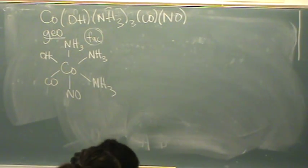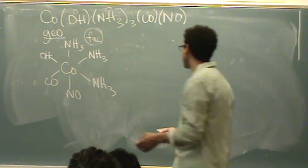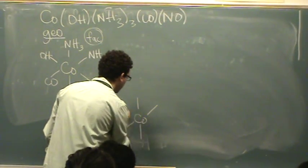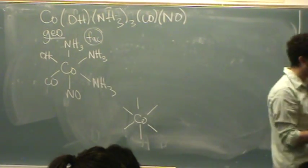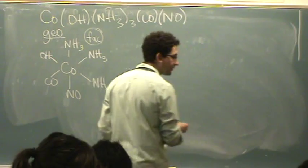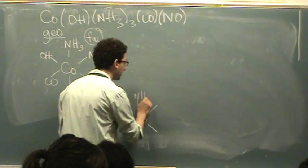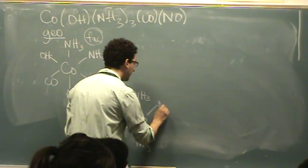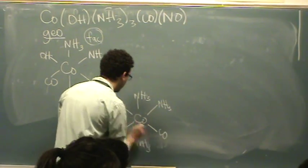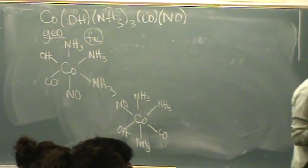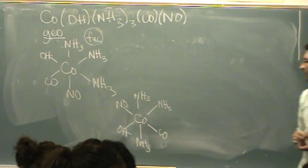Now let's draw the mer — there's almost no room, let's do it down here. Mer is where I'm going to put two of the NH3s on the same axis, the third one on a different axis. Just pick something and draw it. So let's put top and bottom for NH3s, and then put the other NH3 wherever you want. Then you've got CO, NO, and an OH.